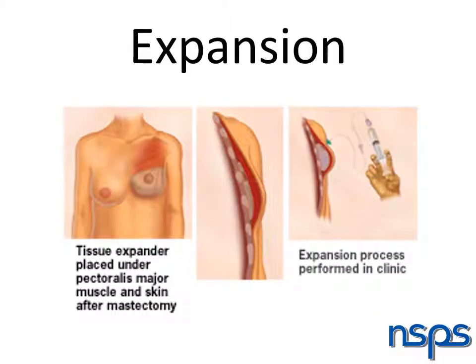Tissue expansion usually begins between two and four weeks after your first stage surgery, when your drains have been removed and your incisions are well healed. The process takes place in the office and is usually painless. Using a needle, the tissue expander port is accessed and fluid can be added. Tissue is expanded gradually over time by adding 50 to 60 cc's at each visit. We usually ask patients to schedule expansion visits at least one week apart.